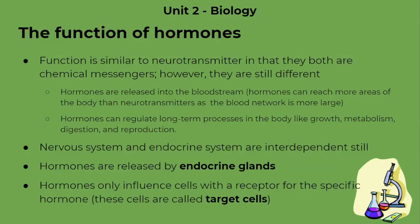Moreover, hormones can regulate long-term processes like the menstrual cycle, growth, metabolism, and digestion, while neurotransmitters are just really quick impulses. We still have to understand that the nervous system and the endocrine system — which is the system of hormones — are still interdependent.